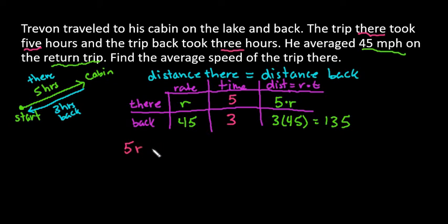So the distance there is equal to the distance back. And then we would just simply solve this equation. So all we have to do is divide both sides by five. And we see that the average rate back is 27. Or sorry, the average rate there is 27 miles per hour.